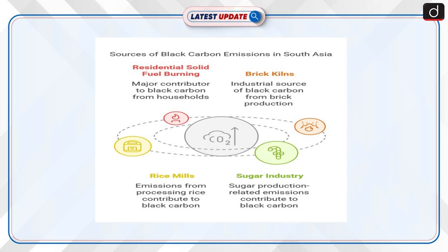In the Hindukush Himalaya region, residential solid fuel burning and brick kilns account for 45-66% of anthropogenic black carbon deposition. These sources, along with industries such as rice mills and the sugar industry, significantly contribute to black carbon emissions in South Asia. The pollution caused by black carbon accelerates the melting of glaciers, ice sheets, and sea ice, particularly in the Arctic and the Himalayan region, posing a threat to water security for billions of people.